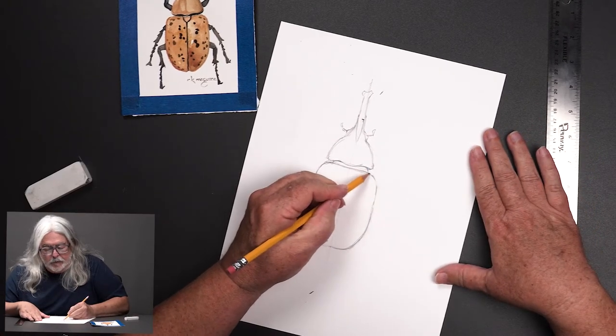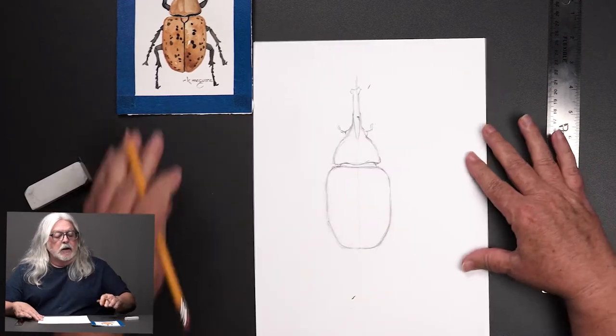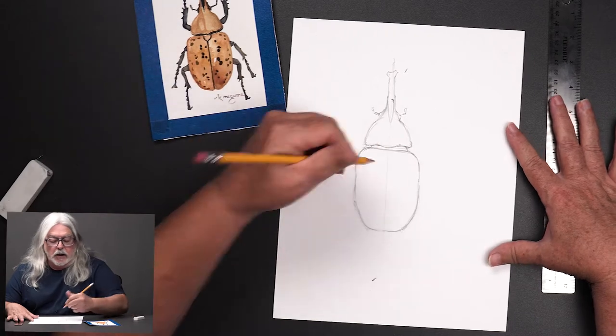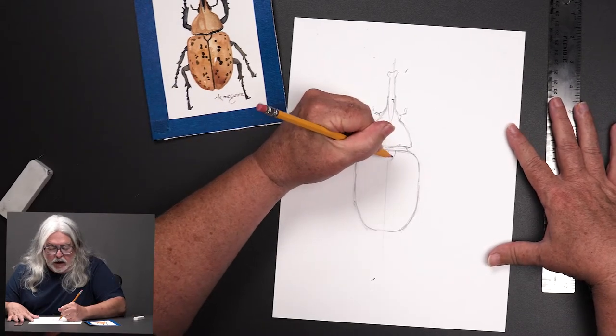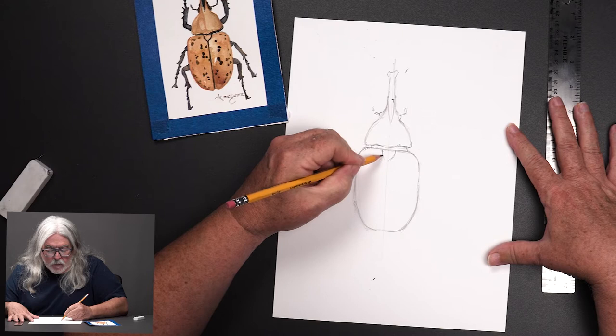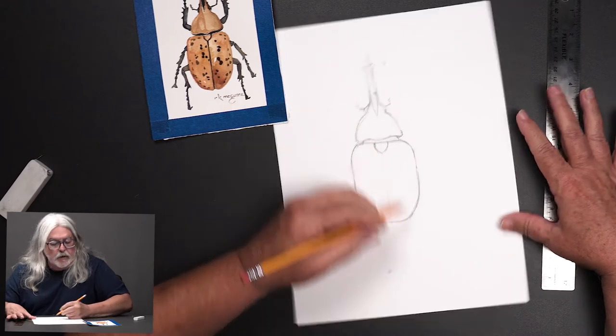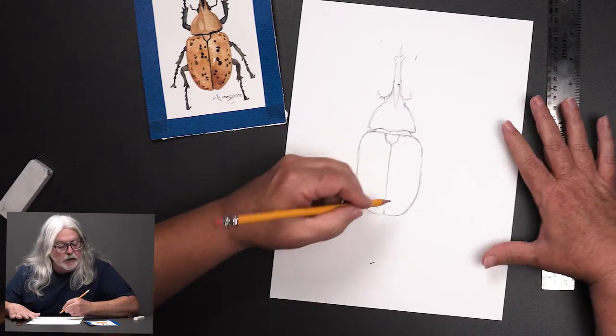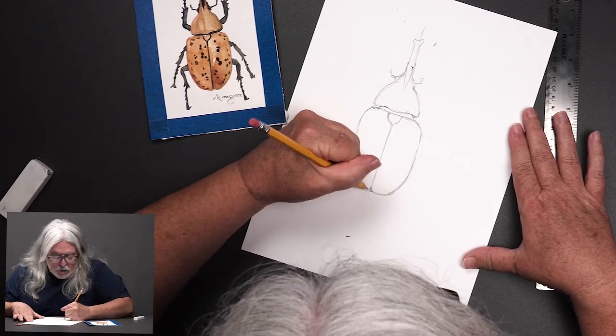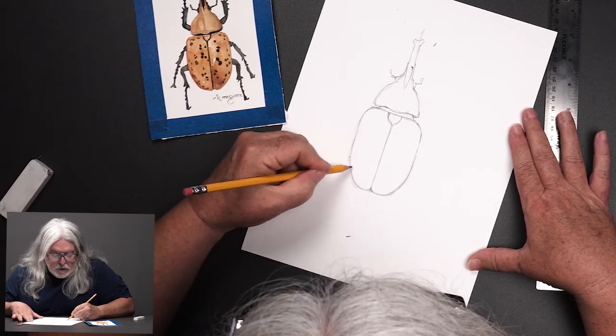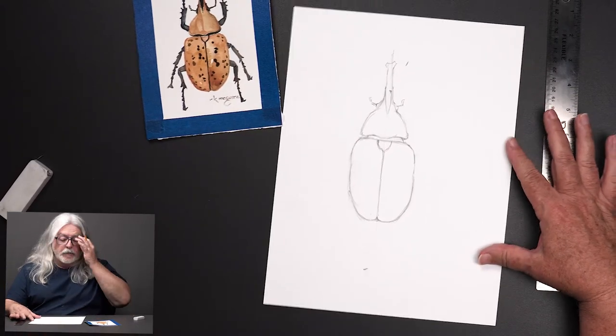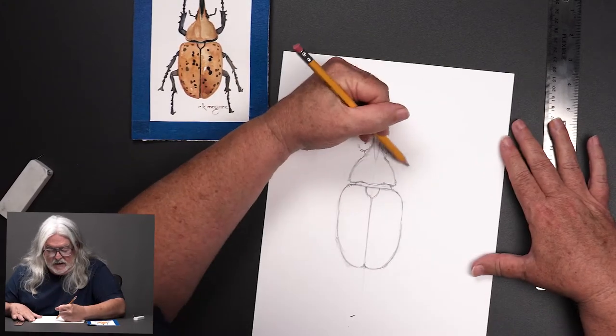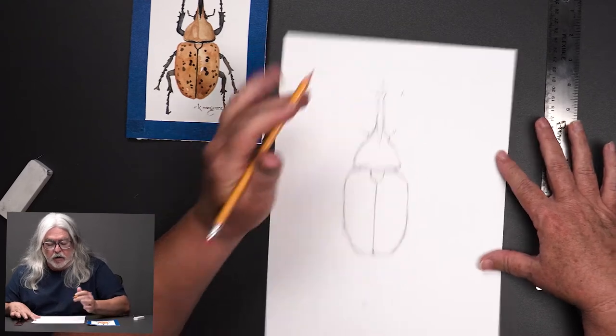All right, so I'm looking at the back of the abdomen now and it has like a little shield at the top, and then it comes on down to, you know, break the shell in half basically, a little curve. Obviously that's where the wings are. So I think we're pretty close here with the body.